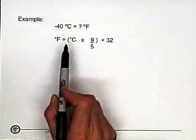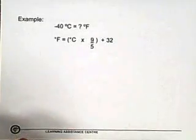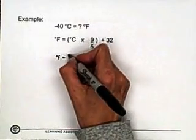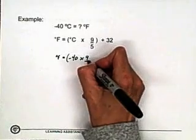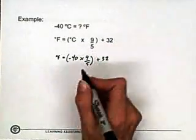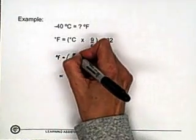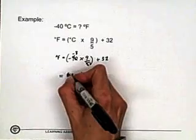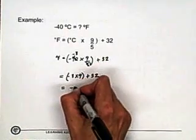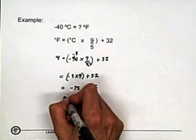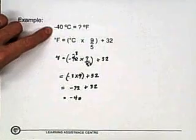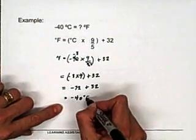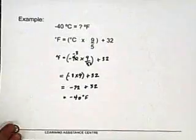Here's another one: minus 40 degrees Celsius is how many degrees Fahrenheit? Using our formula, degrees Fahrenheit equals minus 40 times 9 fifths, then add 32. We can cancel the 5 and the 40: this becomes minus 8, so minus 8 times 9 plus 32 equals minus 72 plus 32, which equals minus 40. Isn't that interesting? At minus 40, Celsius and Fahrenheit are equal — a bit of trivia for those interested.